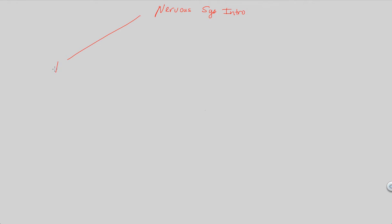We're going to begin by entitling this first introductory flowchart as Nervous System Intro, and here we're just going to lay the groundwork for what the nervous system really consists of and what its purpose is. We can classify the nervous system's function into two main ideas surrounding stimulus: the detection of stimuli and responding to stimuli. The nervous system functions by both detecting and responding to stimuli, and both of these things are very important to the overall physiology of the human body.